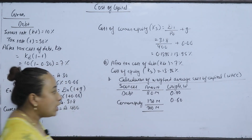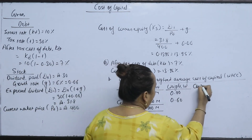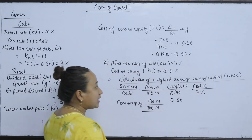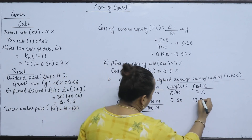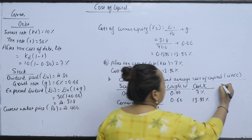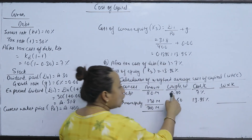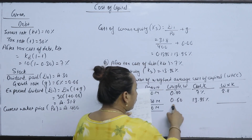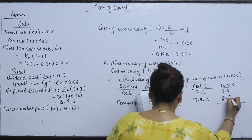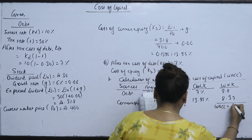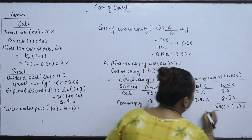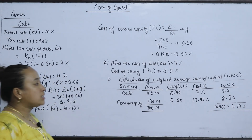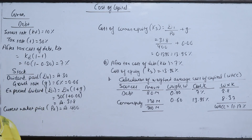Now we apply the costs: debt cost is KDT and equity cost is Ks. W times K: 0.40 into 7 is 2.8, and 0.60 into 13.95 is 8.37. WACC is 11.17%. The weighted average cost of capital is 11.17%.